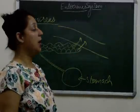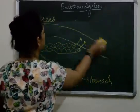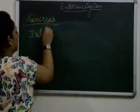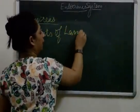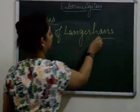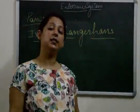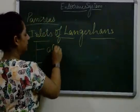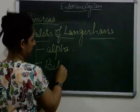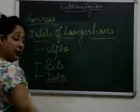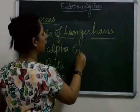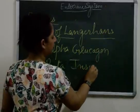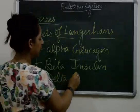The cells of the pancreas that help it act as endocrine are known as the Islets of Langerhans. These endocrine cells are of three types: alpha cells, beta cells, and delta cells. The hormone secreted by alpha cells is glucagon, by beta cells is insulin, and by delta cells is somatostatin.